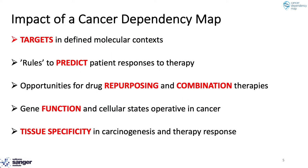We anticipate a cancer dependency map could have a number of important uses. It will help identify new targets in defined molecular contexts, as well as rules to predict why patients respond to certain therapies and others don't. It will also identify opportunities for drug repurposing, including the repurposing of non-oncology agents, and help identify rules to develop rational combination therapies. More broadly, it will give insights into gene function, cellular states in cancers, tissue specificity in carcinogenesis, and in modulating therapy response.